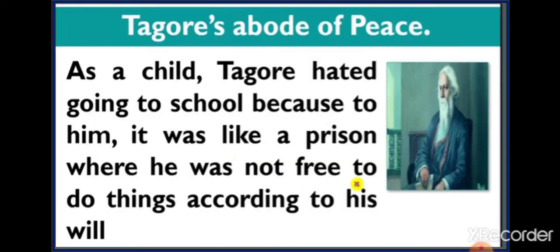Now we are going to learn about Tagore — the Abode of Peace. Tagore is credited with establishing a school in Calcutta called Shanti Niketan, meaning 'the place where there is peace.' When Rabindranath Tagore was a child, he never liked going to school — just like many of you. He felt that school was like a jail, where he had to sit at one place and follow rules. He felt he was not free in school, that his mind was not free.